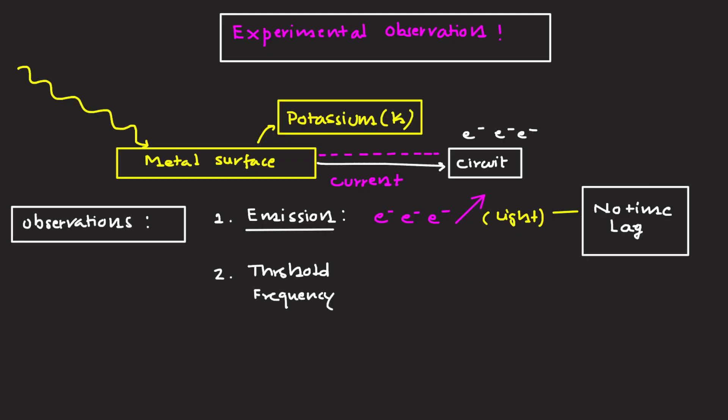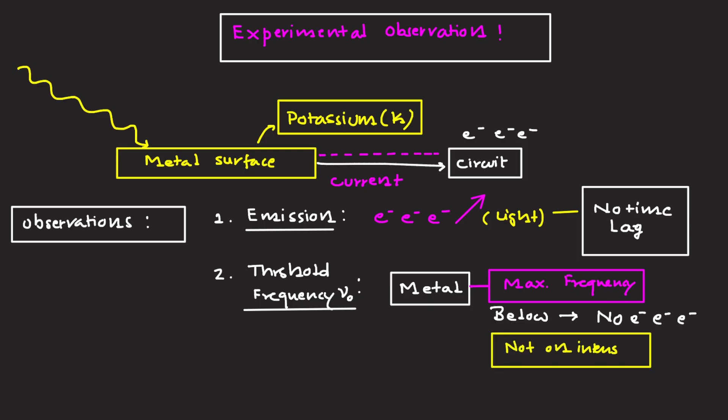Second one is threshold frequency, mu naught. For every metal there exists a minimum frequency below which no electrons are emitted no matter how intense the light is. For potassium, mu naught is equal to 5 multiplied by 10 to the power 14 hertz.